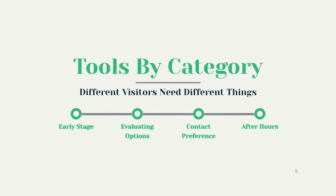Now we get into the real purpose of this webinar: to discuss our tools. We organize our tools by categories. There's a little bit of overlap, but the general premise is based on understanding different types of visitors. The whole idea is that different visitors need different things at different times, and if they don't find the right tool for them, you run the risk of them leaving.